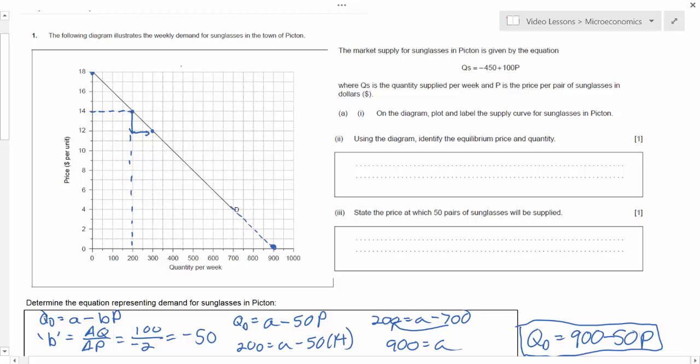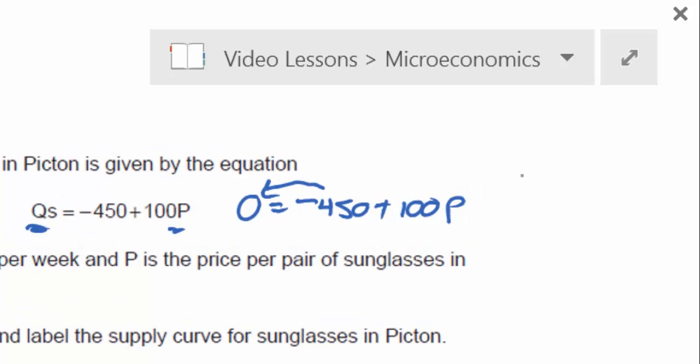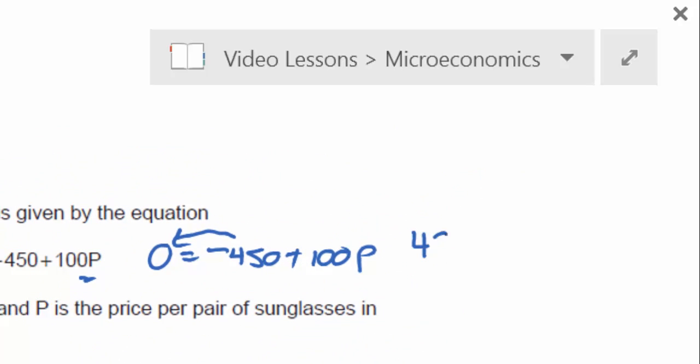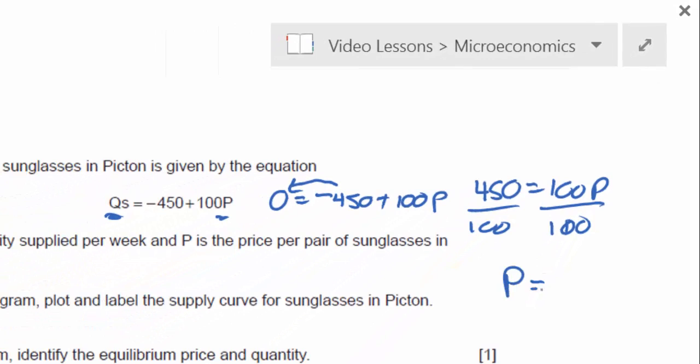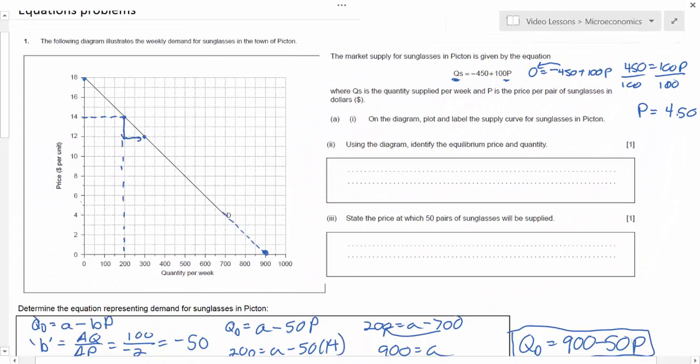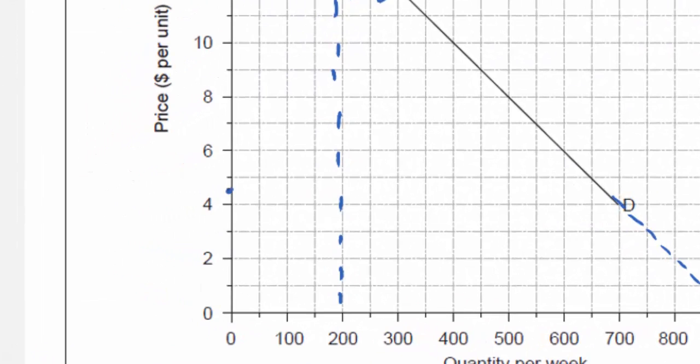To find the price intercept we just set qs equal to 0 and we solve for p. Let's do that here. So 0 equals negative 450 plus 100 times the price. I can move my 450 over here and I've got 450 equals 100p. If I divide both sides by 100, pretty easy to see that the price intercept is $4.50. This tells me the price at which sunglass producers are willing and able to start supplying sunglasses. So I can put one point on my supply curve right here at $4.50.